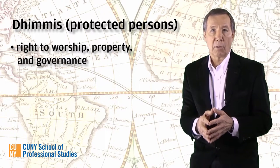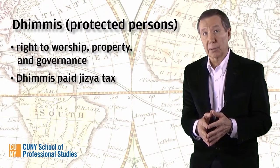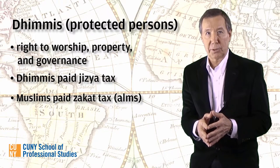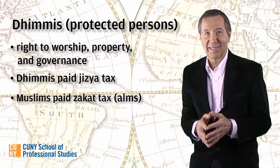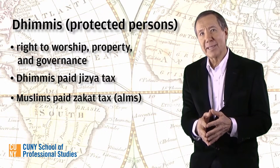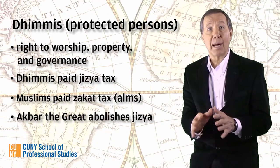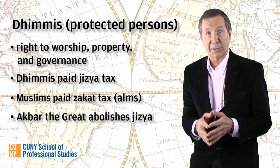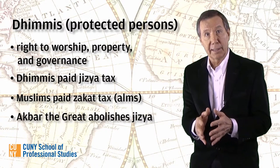However, dhimmis also had to pay the Jizya tax, just as Muslim subjects paid a similar tax called the Zakat — what we would call alms. It seems there's no escaping the tax man, no matter what your religion. So it should get our attention when, in the Mughal Empire, Akbar the Great abolishes the tax paid by non-Muslims, further advancing his efforts at conciliating the different religious groups within India.